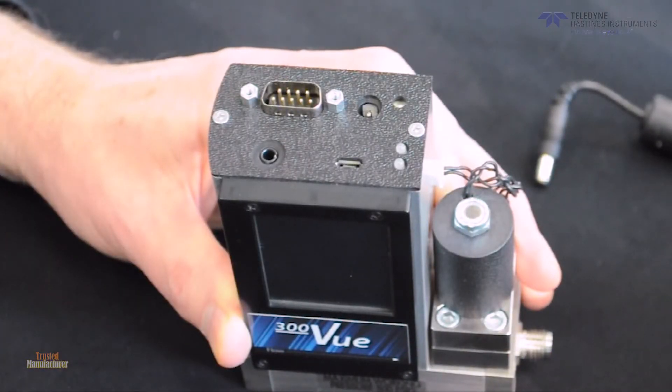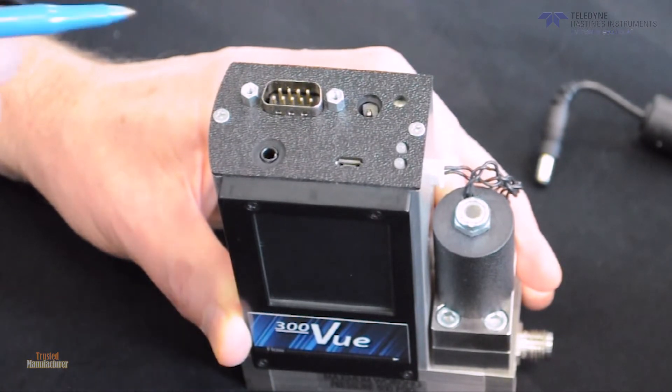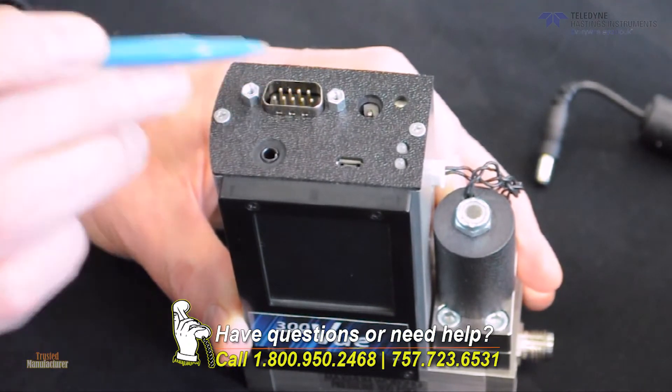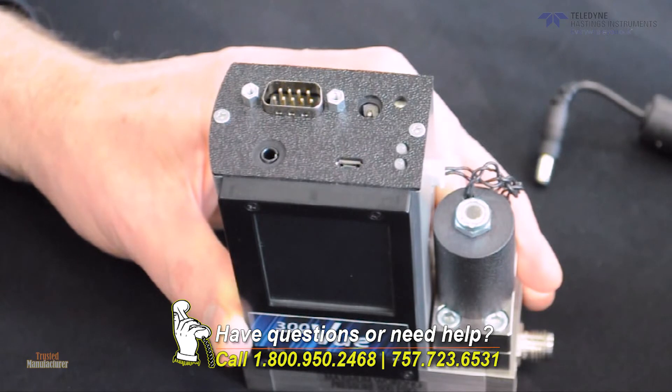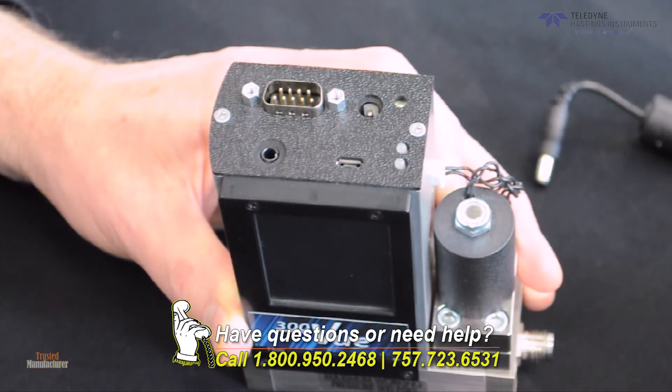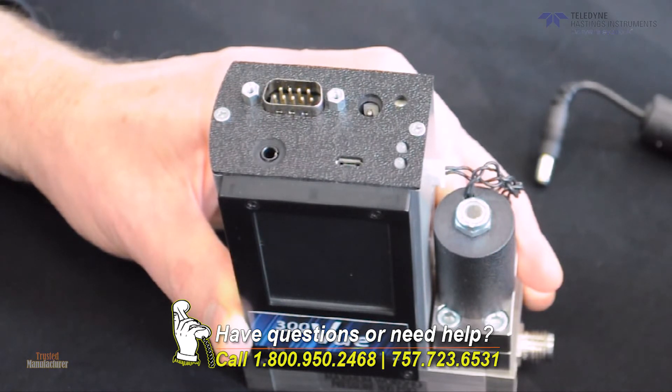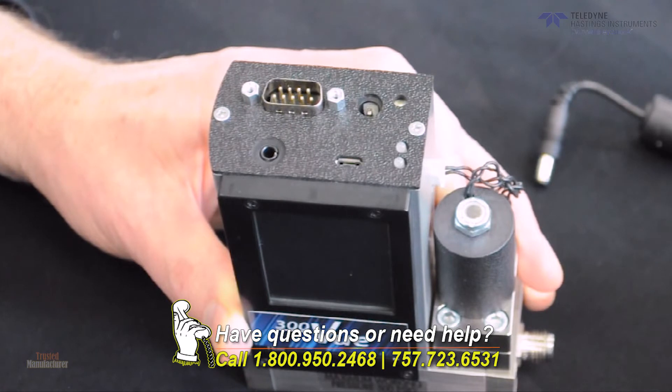The 300 View has an external input pin, pin number one right here, which can accept an analog pressure transducer signal. This is very flexible. We can take in a 0 to 10 volt, 0 to 5 volt, 0 to 20 milliamp, or 4 to 20 milliamp signal, and it can be either positive pressure or vacuum.